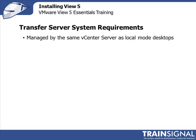For transfer server system requirements, it needs to be managed by the same vCenter as the local mode desktops you're going to be checking out. You can't have it managed by a separate vCenter server. The transfer server and the View Manager servers also need static IP addresses — you can't use DHCP. The installer will not let you proceed without a static IP address on those systems.